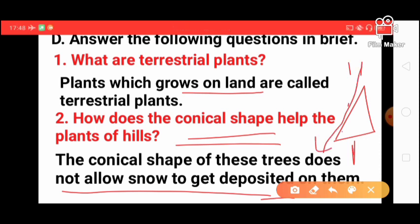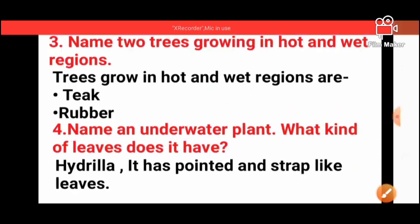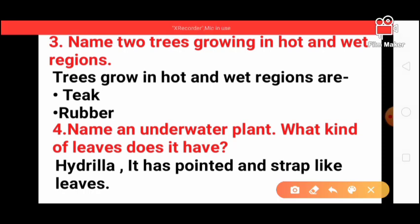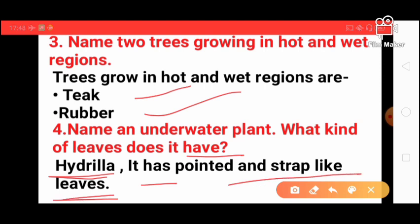Next, name two trees growing in hot and wet regions: teak and rubber. Next, name an underwater plant and what kind of leaves does it have? Hydrilla grows underwater and it has pointed and strap-like leaves.